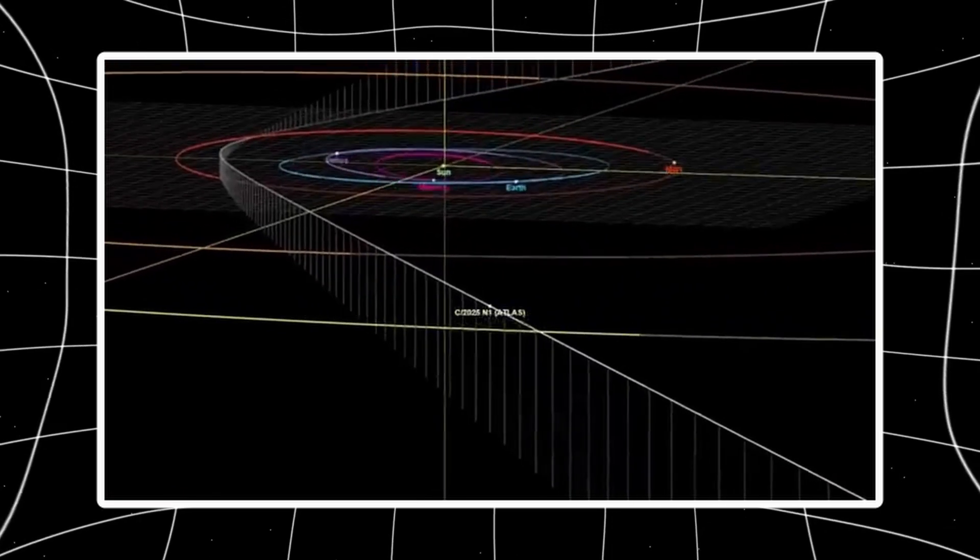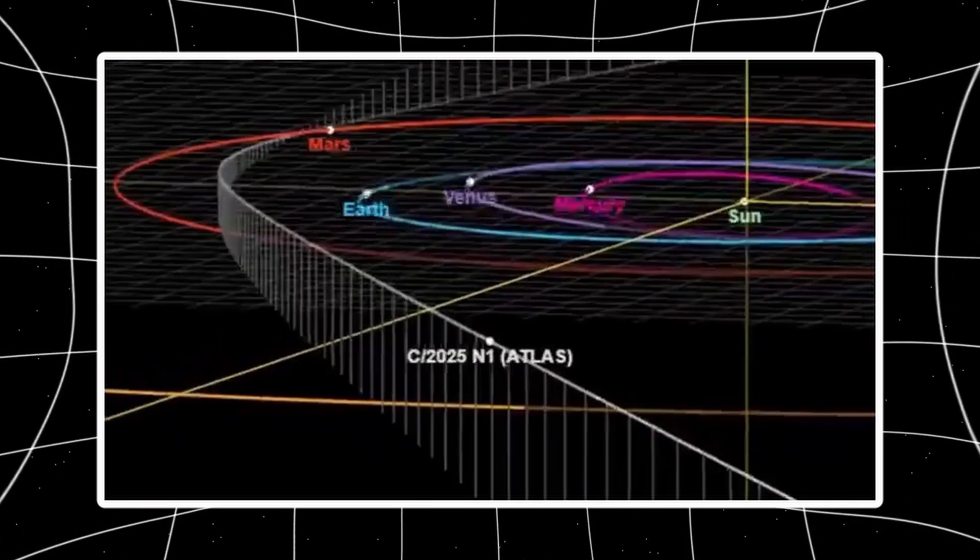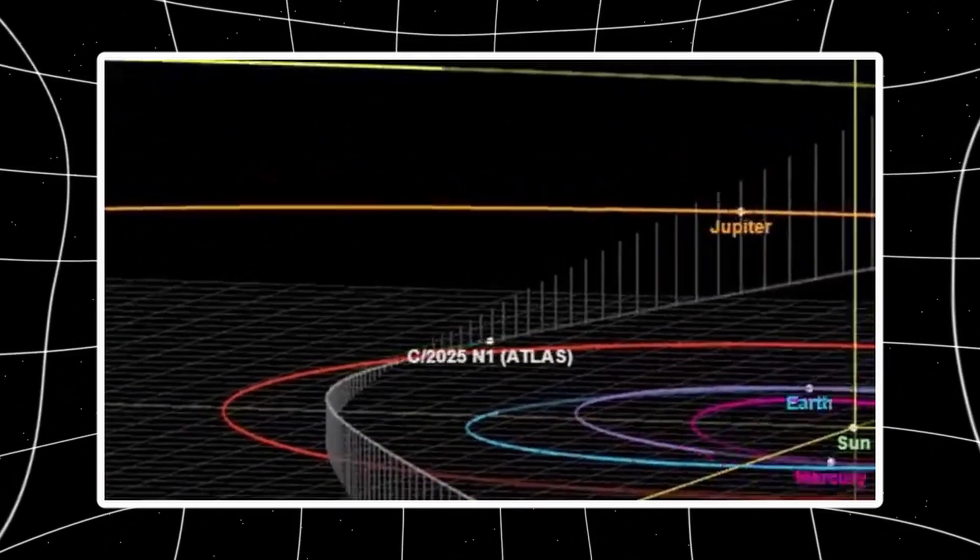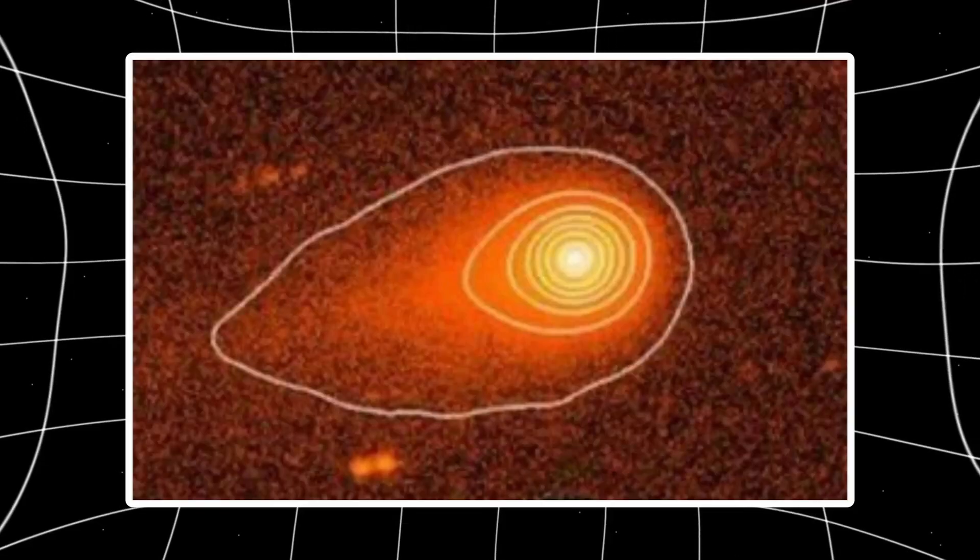Four months of images, three independent observatories, two hemispheres, and every single frame tells the same story. Whatever this thing is, it's not behaving like the comets we know. The geometry isn't collapsing. The structure isn't washing out.